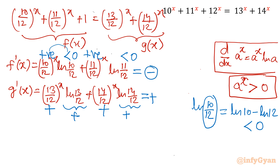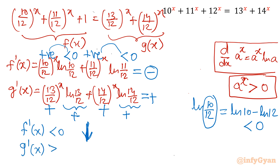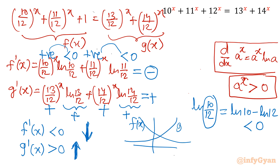Since f'(x) is negative, f(x) is a monotonically decreasing function — which is exactly what we already concluded. For g'(x): ln(13/12) > 0 and ln(14/12) > 0 because both bases exceed 1, so g'(x) is positive. That means g(x) is a monotonically increasing function. One function decreasing, one increasing — only one point of intersection.